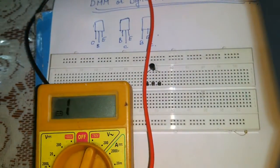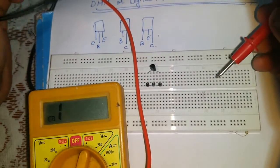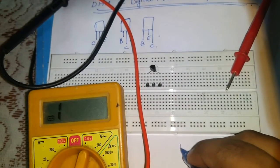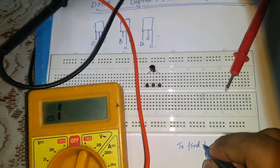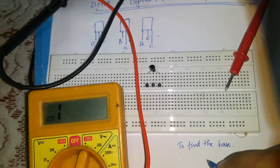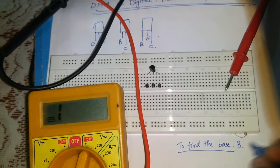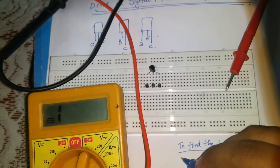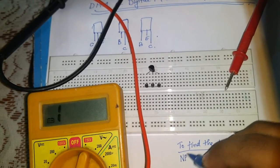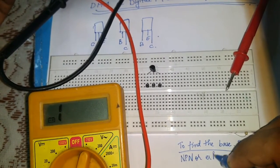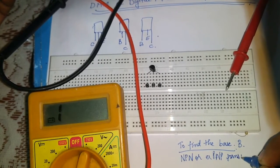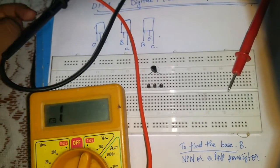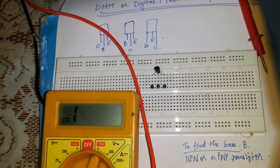Now, we will check each terminals. Our first step would be to find the base. This is because if we can find base, we can determine that it is an NPN or a PNP transistor. That means we can hit two objects with one stone.